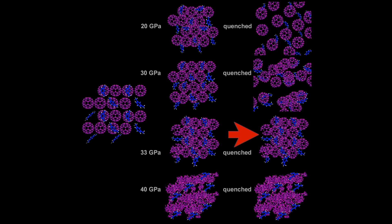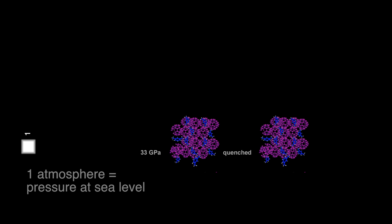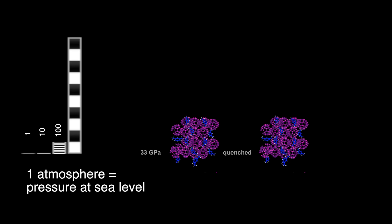The team discovered that there is a narrow window of pressure, about 320,000 times the normal atmosphere, under which this new structured carbon is created and does not bounce back to the cage structure when pressure is removed.